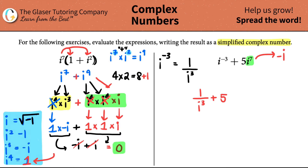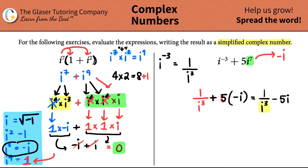Cleaning this up: one over i cubed plus negative five i, which is one over i cubed minus five i. And i cubed is negative i. So this is one over negative i minus five i. Now we don't like having i in the denominator — we need to get it out.